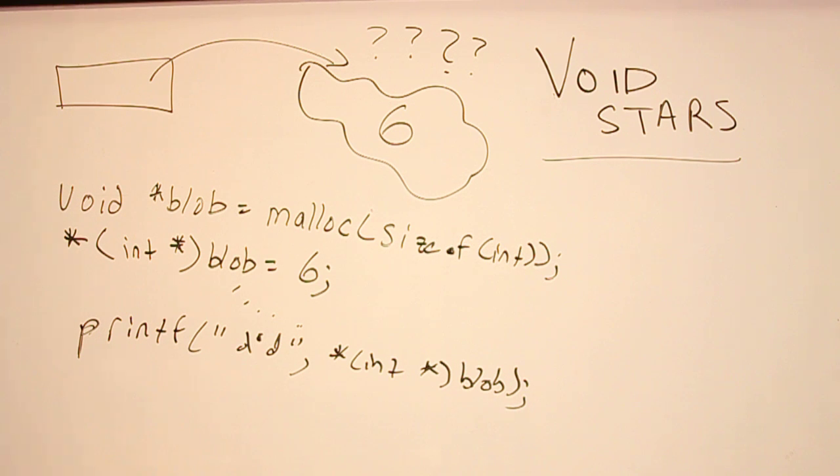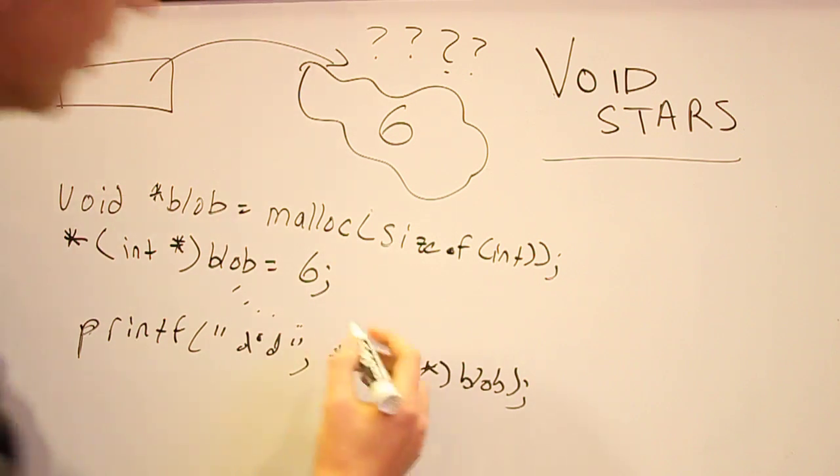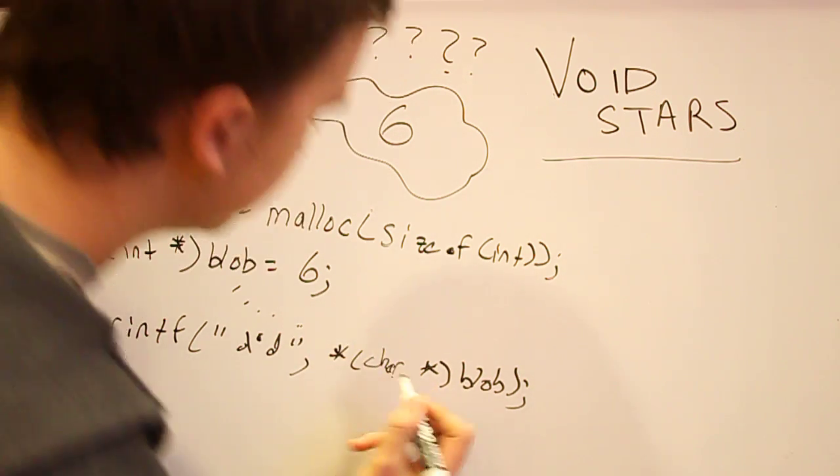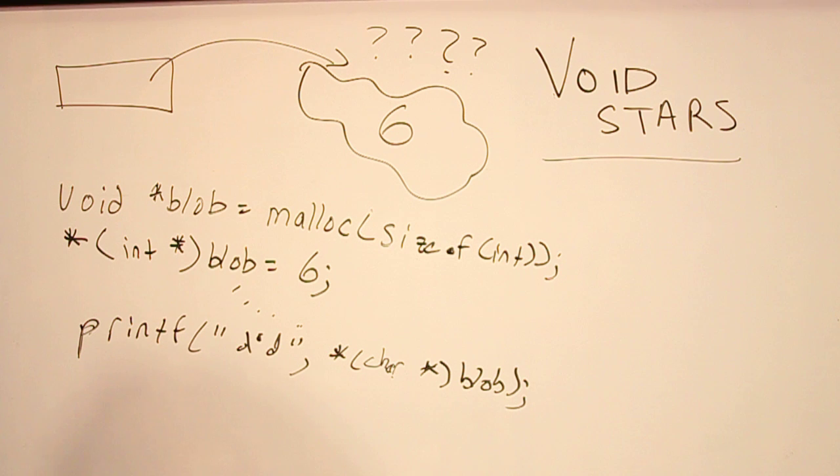So, a word of caution before I leave you. Void stars are kind of dangerous. So, say that instead of printf-ing this and casting it into an int, I was foolish and I forgot what it was. And I called it a car. C will totally let you do that. C doesn't care. C I don't think will even give you a warning.